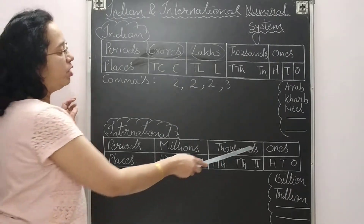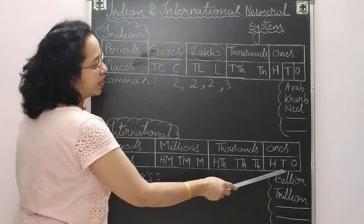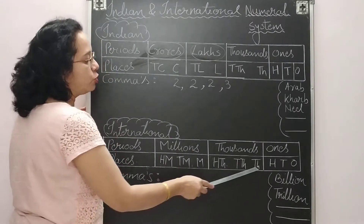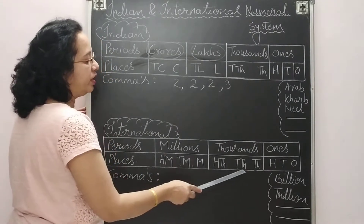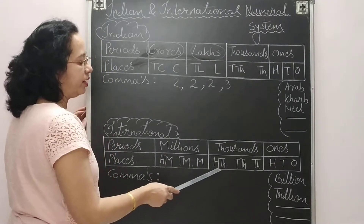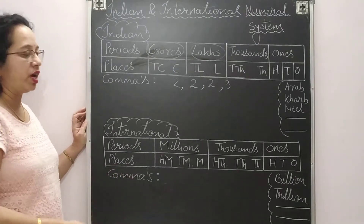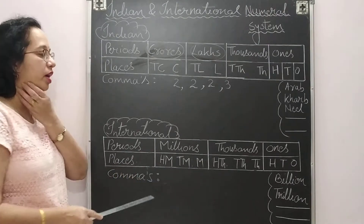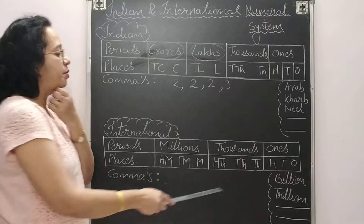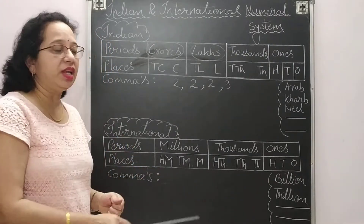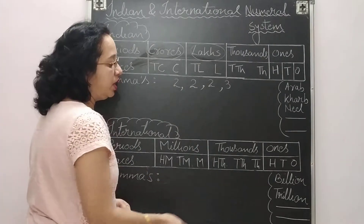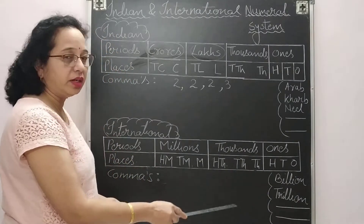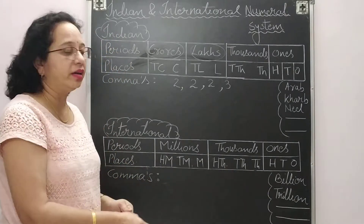In ones, we have three places: ones, tens, hundreds. In thousands, also three places: thousand, ten thousand, hundred thousand. In millions, also three places: million, ten million, hundred million. Similarly, in billions and trillions — trillion, ten trillion, hundred trillion — each period has three places.